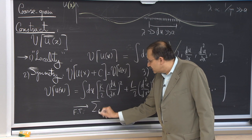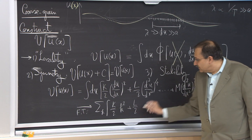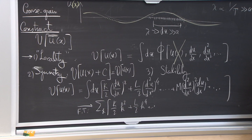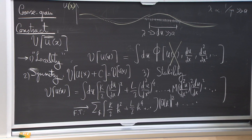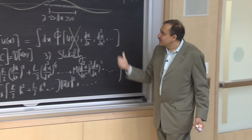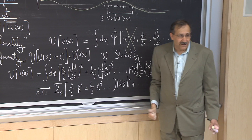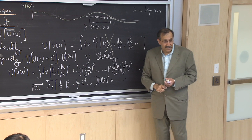When I Fourier transform, the quadratic part becomes a sum over k: K/2 times k² times |ũ(k)|², plus K₄ times k⁴, and so forth. Whether or not odd derivatives appear depends on additional symmetry considerations such as mirror symmetry or symmetry under u → −u. Once I go beyond the quadratic level, I need to rely on additional symmetry statements to determine which terms are allowed.